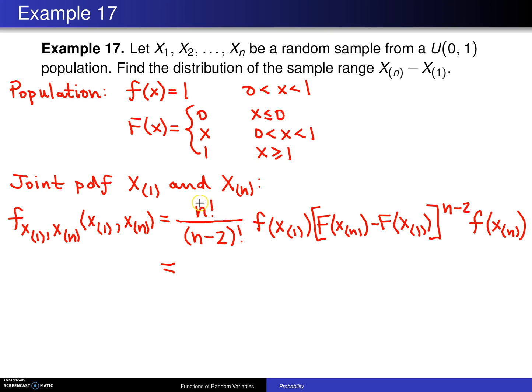When you simplify this for this particular sample taken from a uniform 0, 1 population, well, n factorial divided by (n-2) factorial becomes n times (n-1). This probability density function evaluated at x_(1) will just be 1. I've chosen the easiest distribution in the world for this to be worked on. So this right here is nothing but 1. Likewise, this over here is nothing but 1. And because capital F(x) is just x on its support, this middle term becomes x_(n) minus x_(1) raised to the (n-2) power.